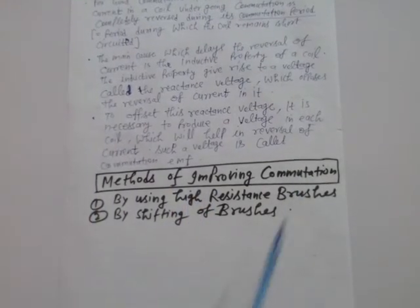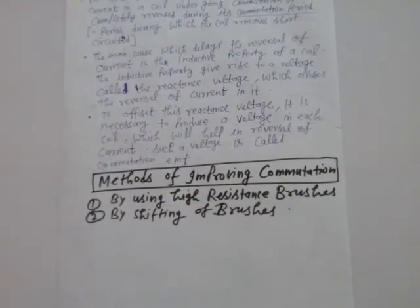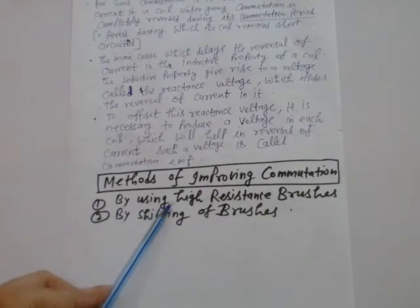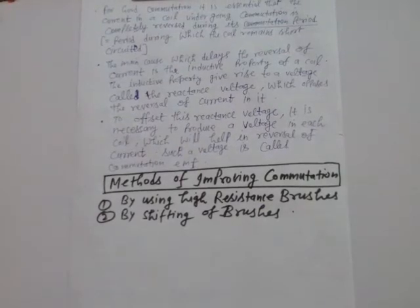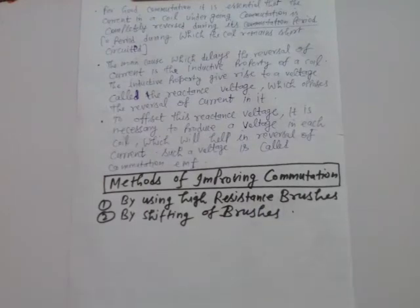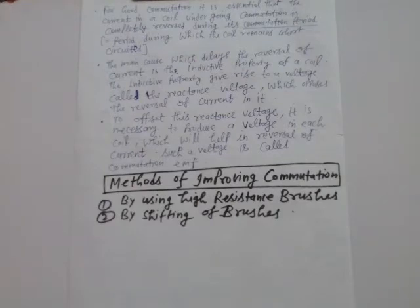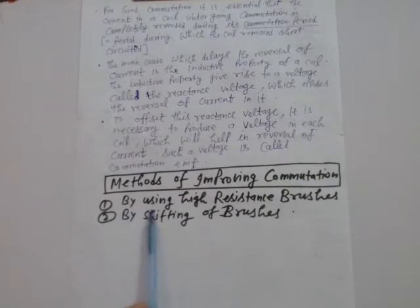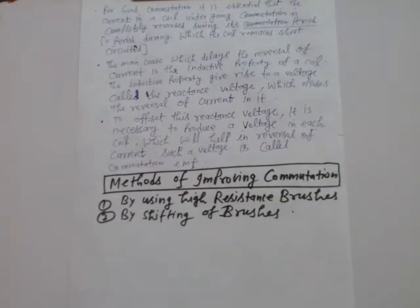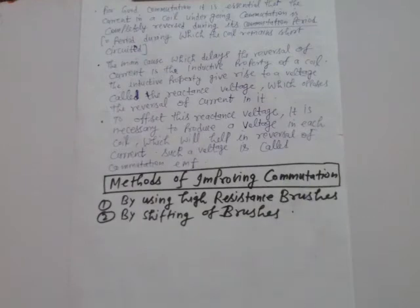There are two methods to improve commutation. The first method is by using high resistance brushes made of carbon or graphite. Using such high resistance brushes will mitigate the possibility of sparking, thereby giving good commutation.